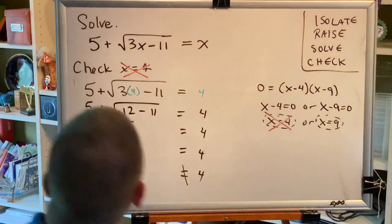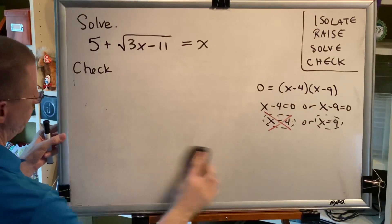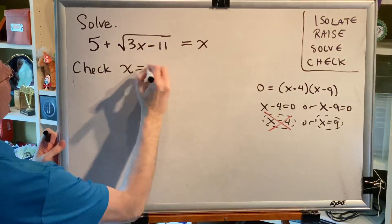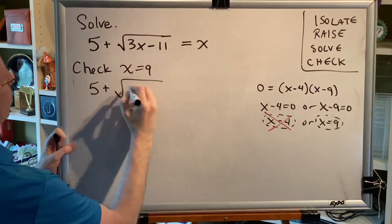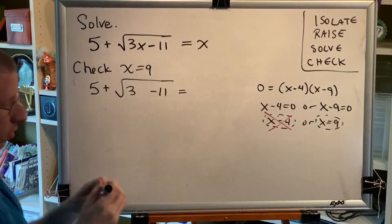Well, that didn't work. So let's try 9. Check x equals 9. 5 plus the principal square root of 3 times 9 minus 11 equals 9.